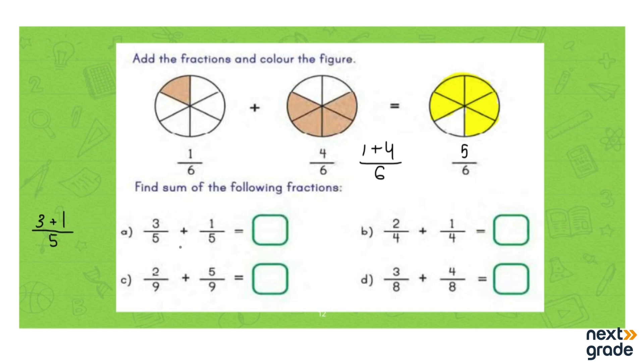Next we have part b, and that is 2/4 + 1/4. Let's practice it together. We're gonna write the numerators together with the single denominator. 2 + 1 is 3, so we're gonna write it as 3/4.